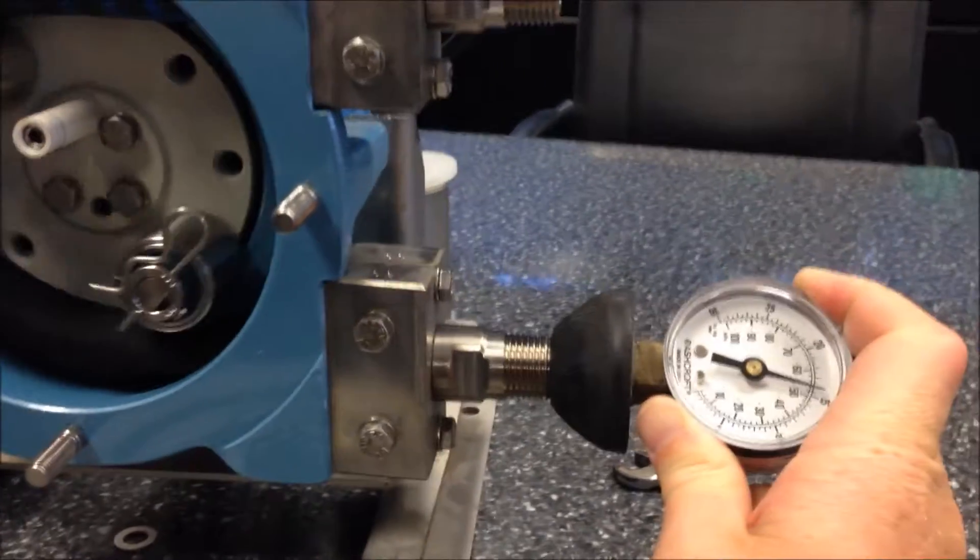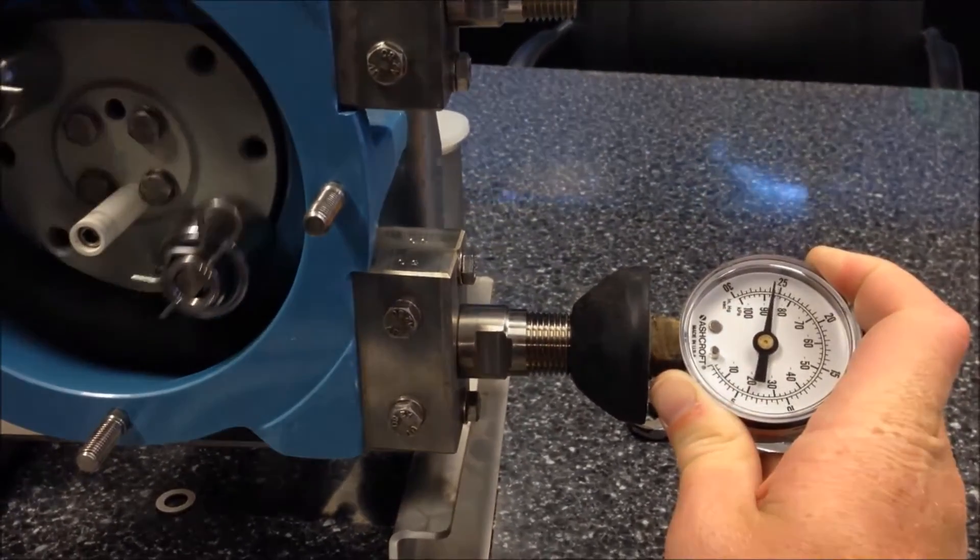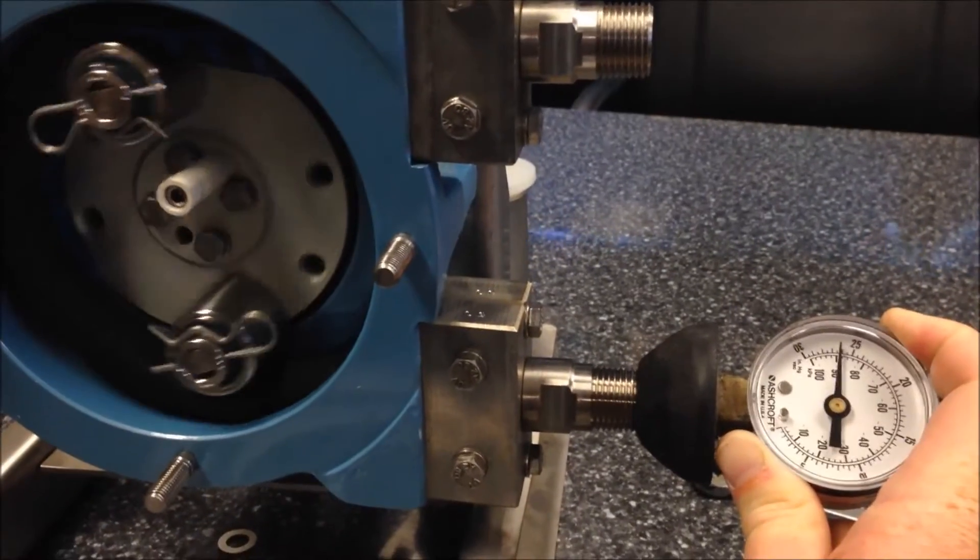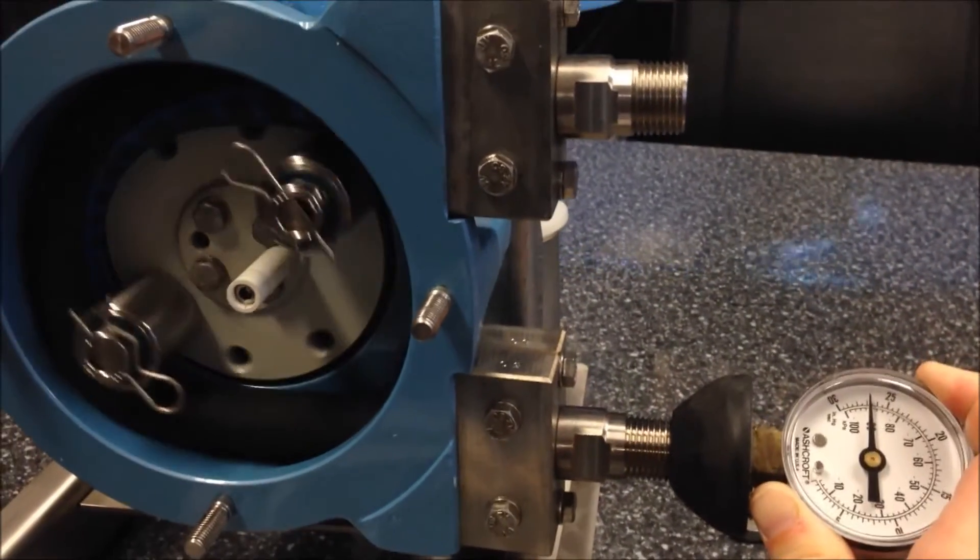We immediately begin to build vacuum. The pump will generate an excess of 25 inches of mercury, closer to about 27. We'll maintain that.